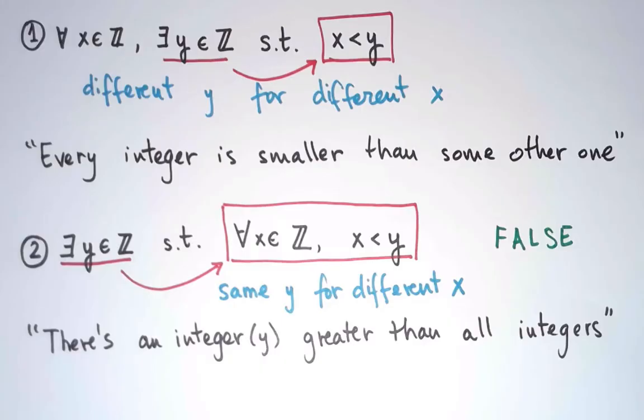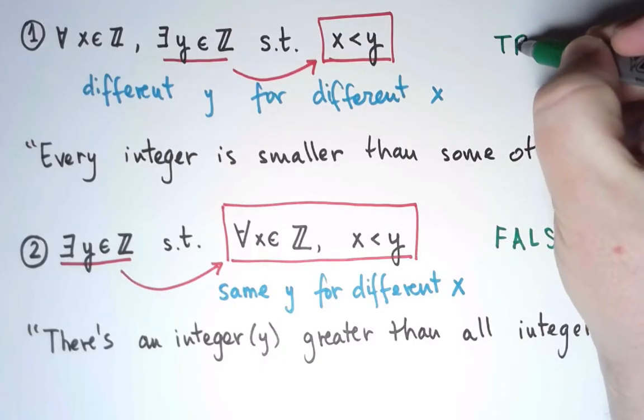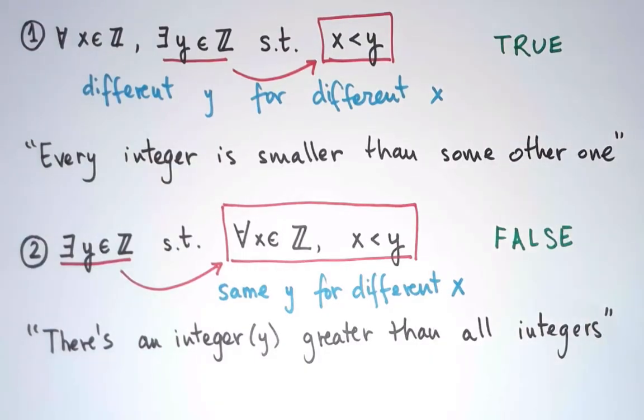And when I put it this way, we see that that is true. Yes, every integer is smaller than another one. If I give you a value of x, you will always find one to reply that is bigger.